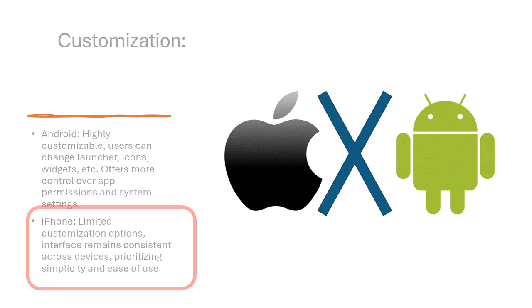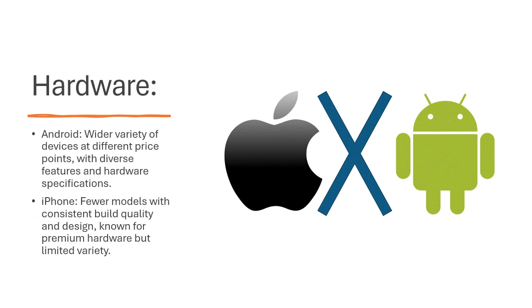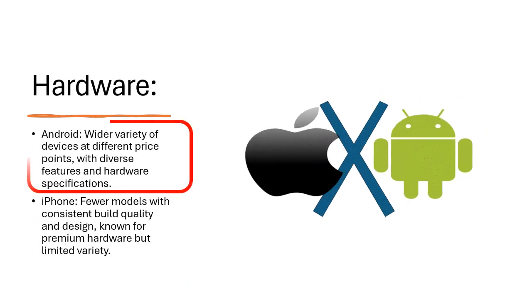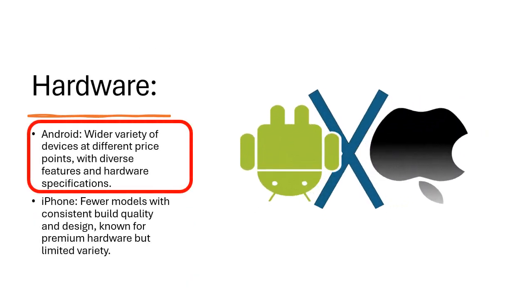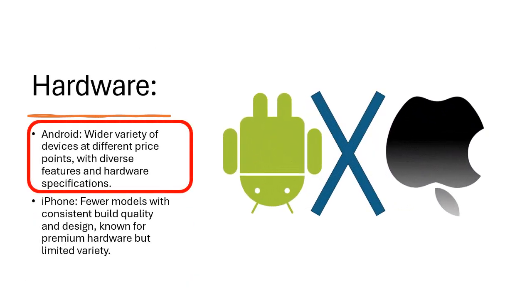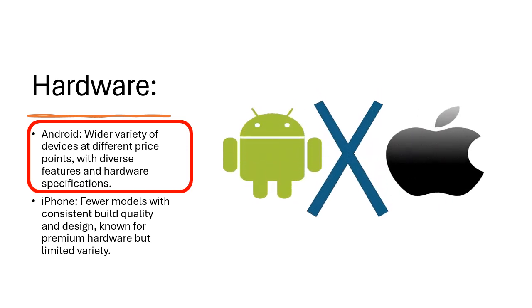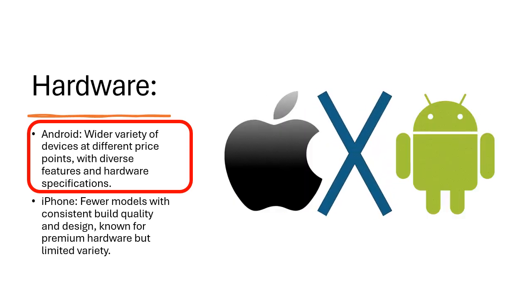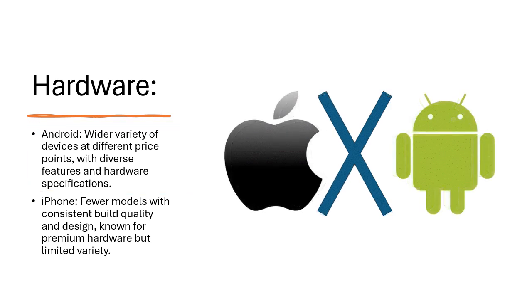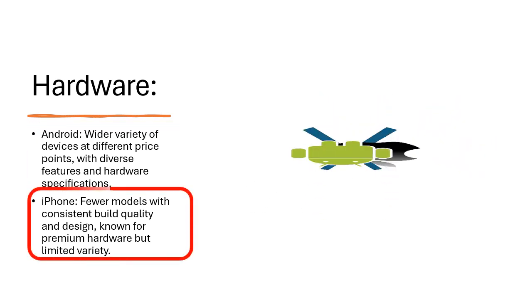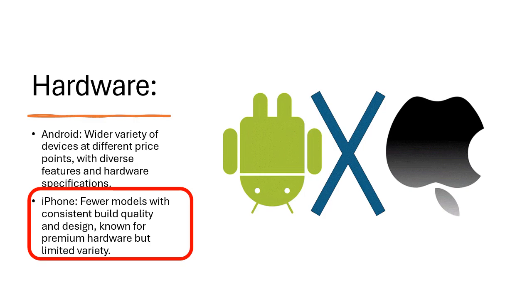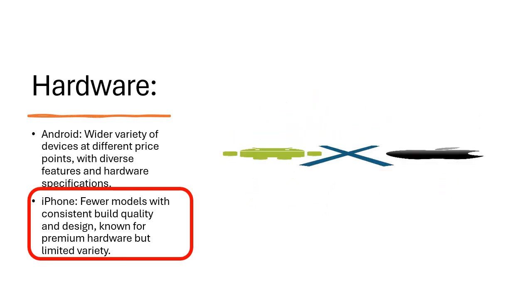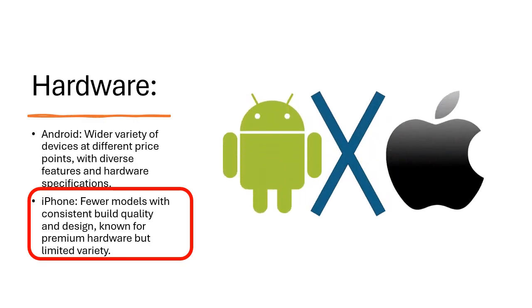Hardware: Android offers a wider variety of devices at different price points, with diverse features and hardware specifications. iPhone has fewer models with consistent build quality and design, known for premium hardware but limited variety.